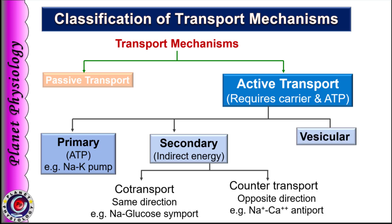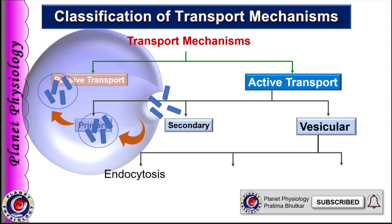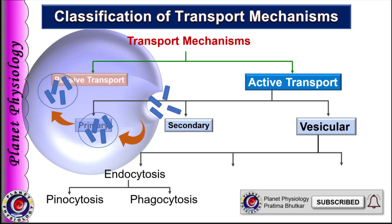The third type of active transport is vesicular transport. In the true sense, it is not transport across the cell membrane because the substance does not cross the cell membrane directly. Instead, the cell membrane surrounds the substance to form a vesicle, and the substance either enters or leaves the cell. If the substance enters the cell via vesicle, it is known as endocytosis. If the engulfed substance is liquid, it is termed pinocytosis, and if the substance is solid, it is known as phagocytosis. If the substance leaves the cell via vesicle, the process is called exocytosis.